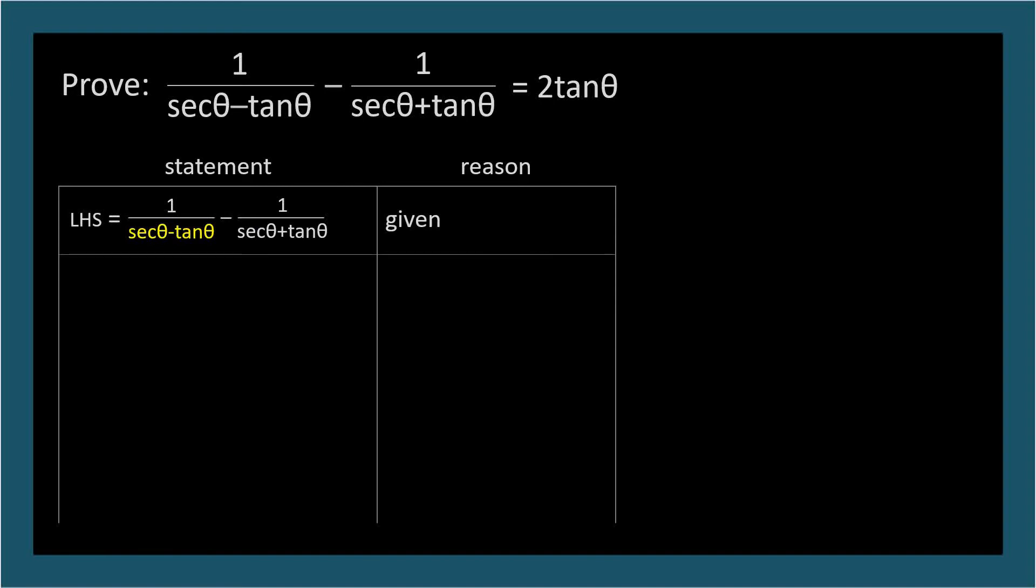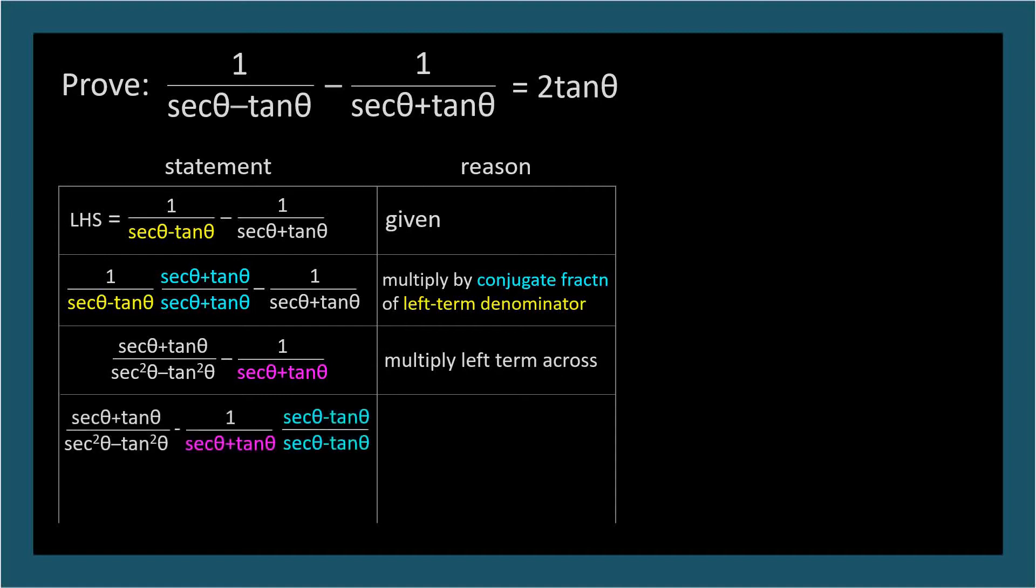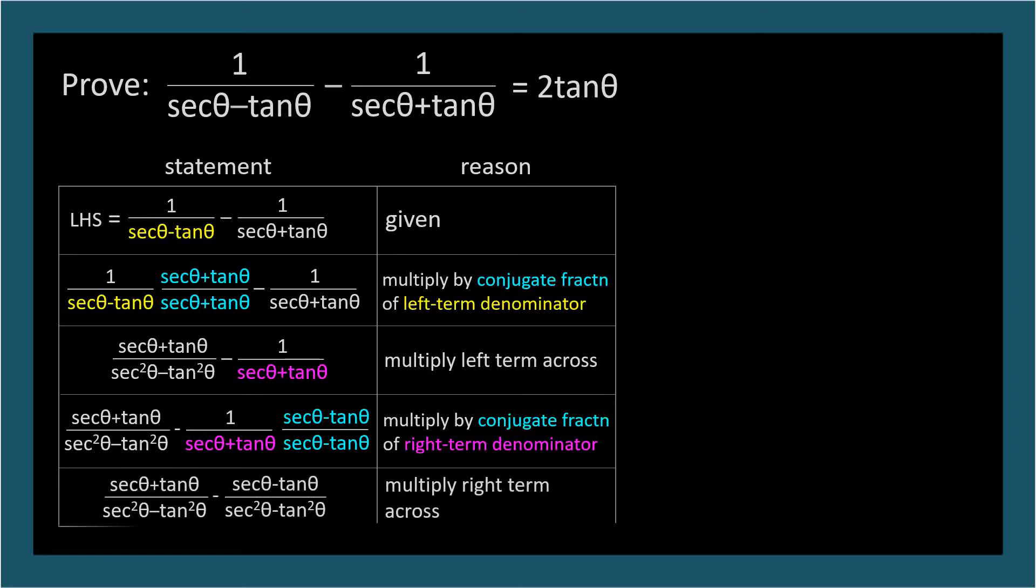Both of these fractions have denominators that are good candidates for conjugate multiplication. But let's go step by step. I'll start with the left fraction. The denominator is secant theta minus tangent theta, so we'll multiply it by the unit fraction secant theta plus tangent theta over secant theta plus tangent theta. As we'd intended, this gives us the difference between squares in the denominator, which we'll handle later. We can apply the conjugate treatment to the right fraction now, so we multiply by secant theta minus tangent theta over secant theta minus tangent theta. And here's what we get when we multiply the right terms across.